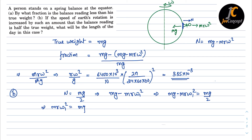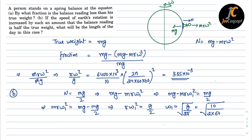From the equation mr·ω₁² equals mg minus mg/2, we get r·ω₁² equals g/2, so ω₁ equals √(g/2r). Substituting g=10 and r=6400×10³ m gives ω₁ equals 8.83×10⁻⁴ rad/s. The new time period T equals 2π/ω₁. Converting the result from seconds into hours gives approximately 2 hours. So this is the solution to this problem.